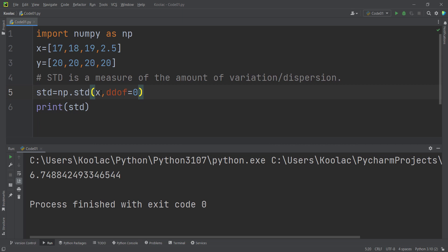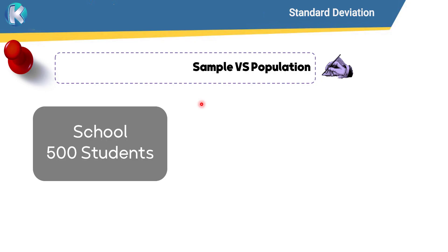Now let's talk about the sample and population concept in statistics. Suppose that we have a school with 500 students and we want to study their heights — for example, the mean of their heights, the standard deviation of their heights, and so on.